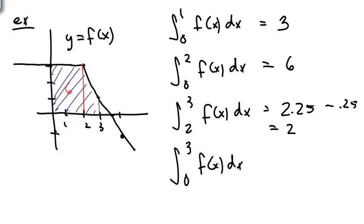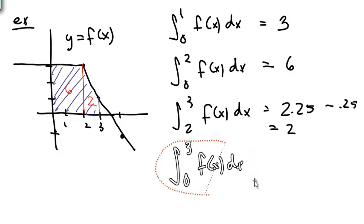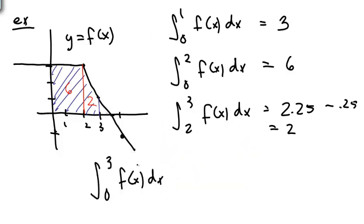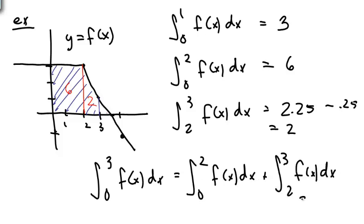And the area from 2 to 3 is 2. So clearly, the area from 0 to 3 is going to be the area from 0 to 2 plus the area from 2 to 3, which is to say 6 plus 2 is 8.